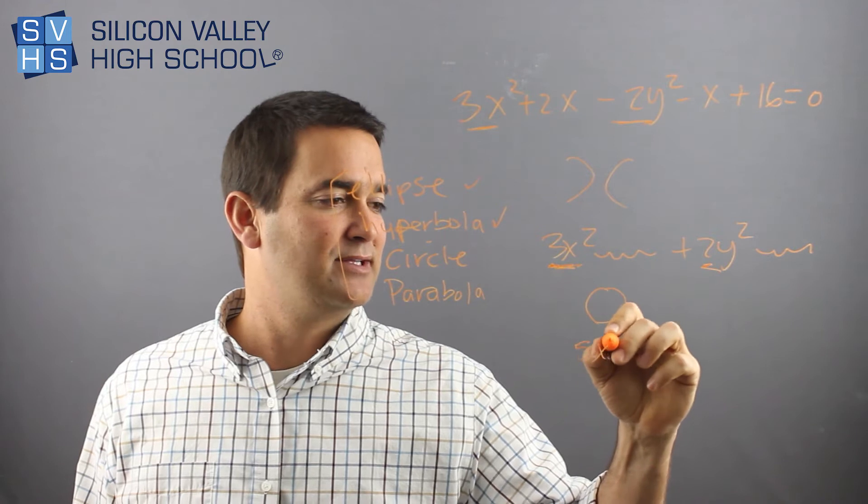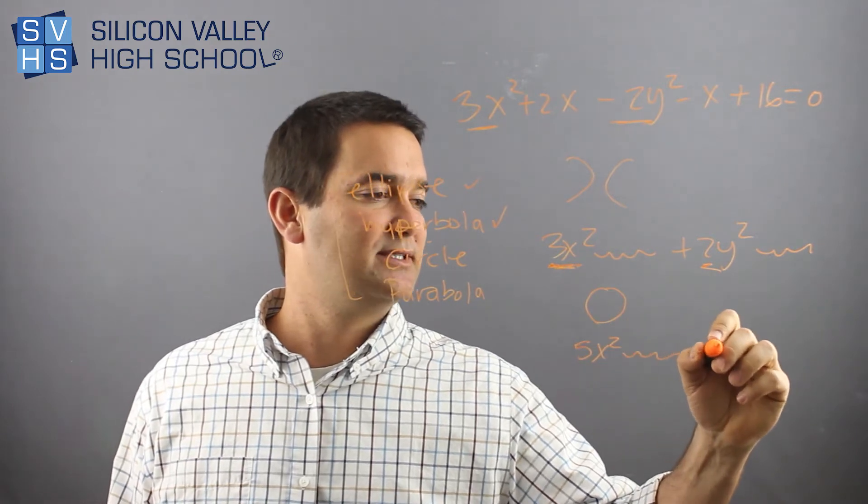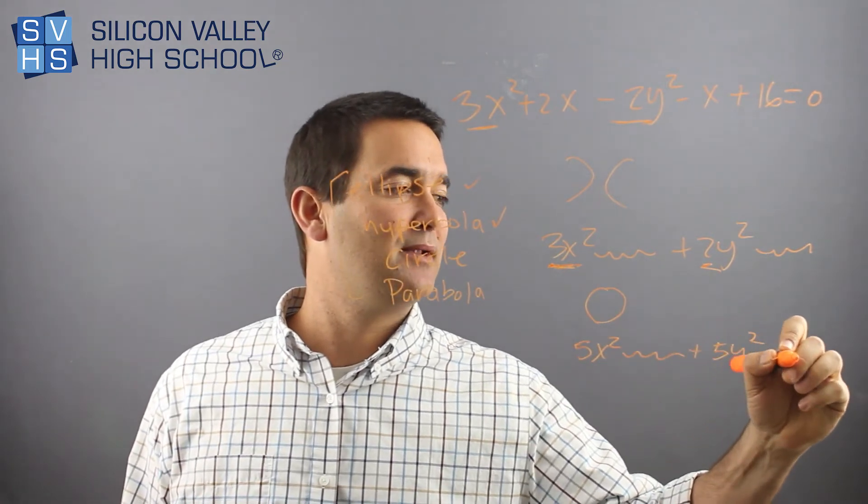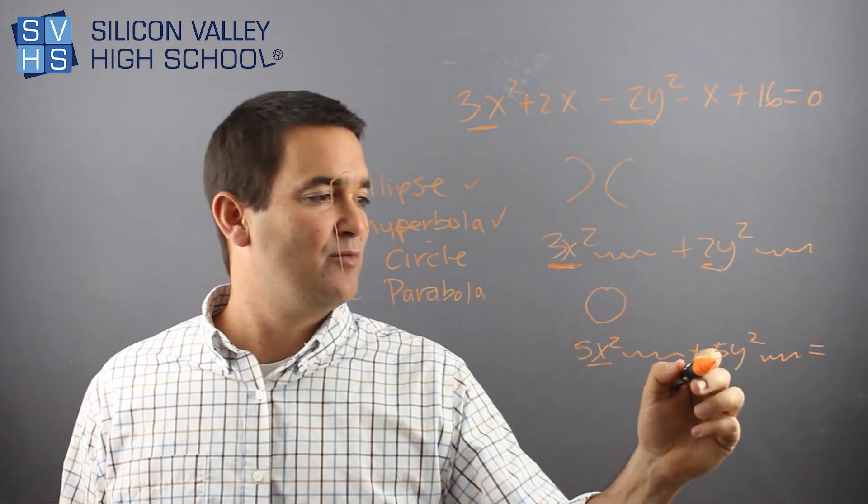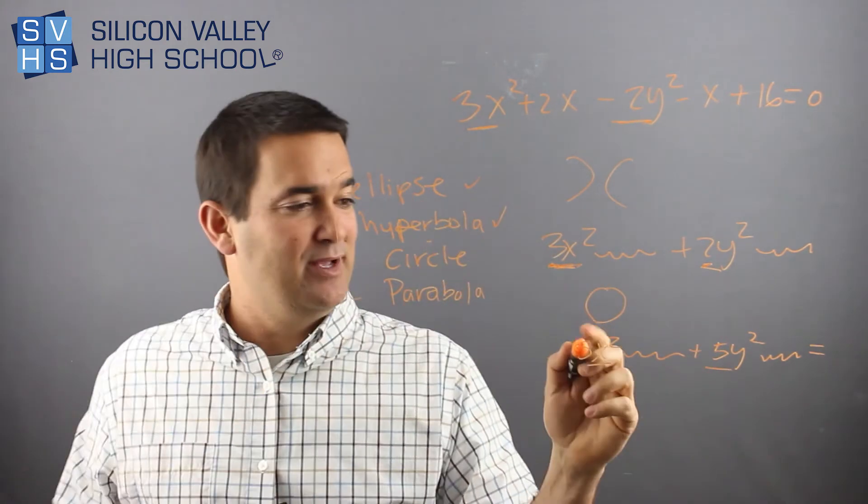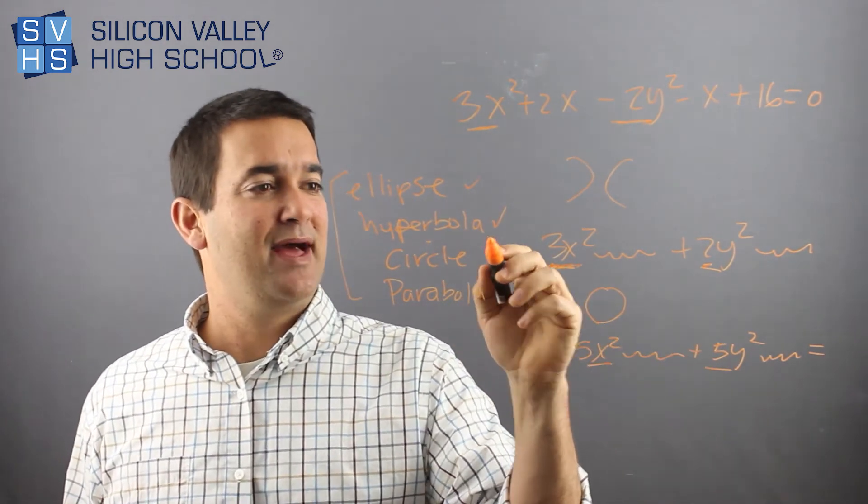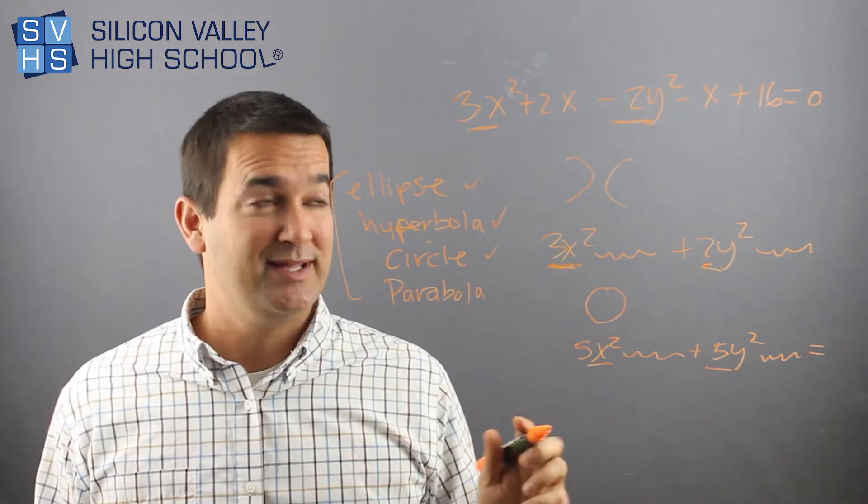like let's say you had 5x squared plus 5y squared equals whatever, these are both positive. They're being added, and because the coefficients are the same, then that is a circle. It's totally that easy.